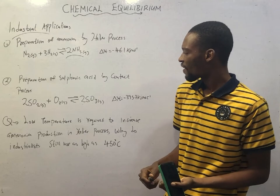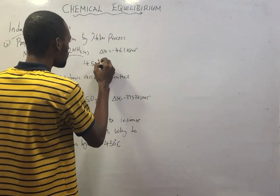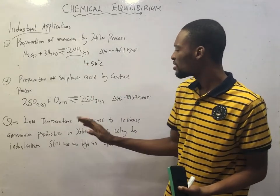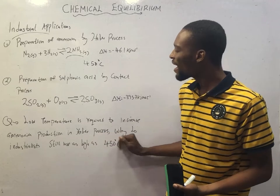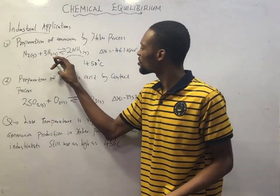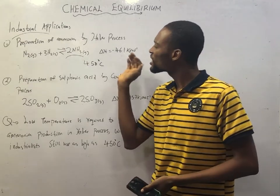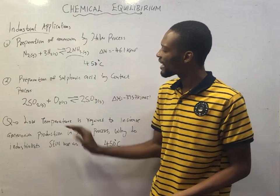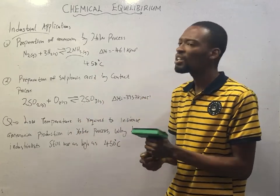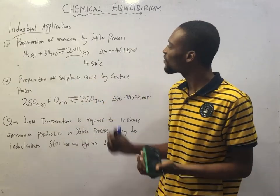In the Haber process, the temperature is reduced to around 450°C, which is still relatively high. A question arises: if low temperature increases ammonia yield, why do industrialists use as high as 450°C? The answer is that reducing temperature too much — say to 350°C as in the contact process — would form more product but equilibrium would not be reached quickly enough. Therefore, 450°C is used as a compromise to achieve equilibrium at a reasonable rate.